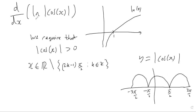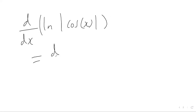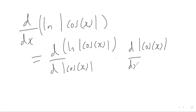Now let's go ahead and differentiate this function properly. It's going to be a case of using the chain rule. We're going to differentiate ln of the modulus of cos x by differentiating ln of the absolute value of cosine of x with respect to the absolute value of cosine of x, and then multiplying that by the derivative of the modulus of cosine of x with respect to x.